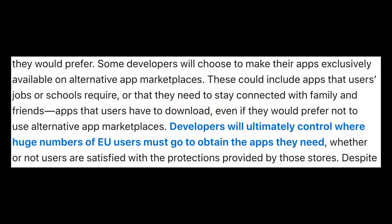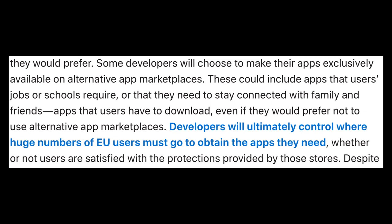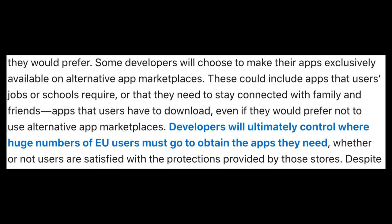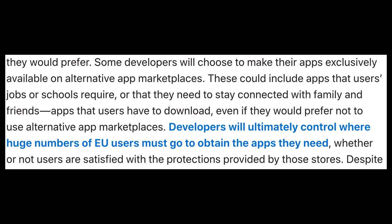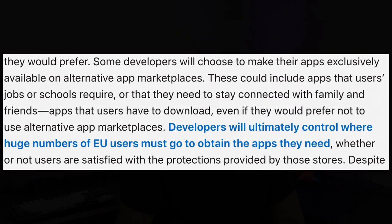This is a very interesting paragraph in this document. It says: 'Some developers will choose to make their apps exclusively available on alternative marketplaces, and these could include apps that users' jobs or schools require, or that they need to stay connected with family and friends — apps that users have to download even if they would prefer not to use alternative app marketplaces. Developers will ultimately control where huge numbers of EU users must go to obtain the apps they need, whether or not users are satisfied with the protections provided by these stores.' So let me get this straight — Apple has a problem with developers controlling where users download their apps from, but Apple has no problem doing it themselves. What they're trying to say is that developers having control over where their apps should go is a problem. I'll put a link in the description below so you can download it and take a look at it yourself.